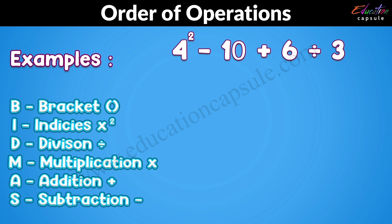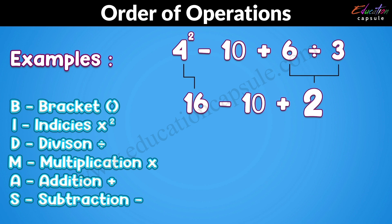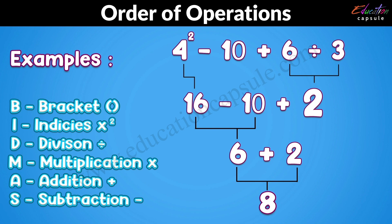Let's start with the indices: 4 squared is 16. Then division: 6 divided by 3 is 2. We now have 16 take away 10 add 2. We will do the operation which comes first from the left hand side, so subtraction first: 16 take away 10 is 6. Then 6 add 2 is 8. So the answer is 8.